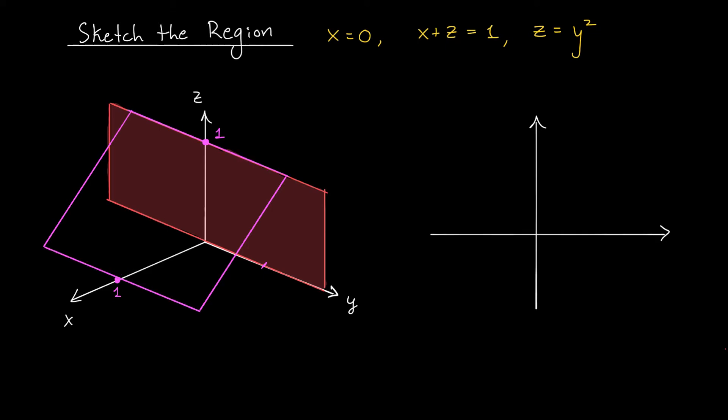Finally, our region is bounded by the parabolic cylinder z equals y squared. At first, you might not know how to draw this region, but it's really not that bad. After all, if this were y equals x squared, it would be a parabola in the xy plane. Now, we've replaced y with z and x with y. So, we have a parabola in the yz plane. It might look something like this.